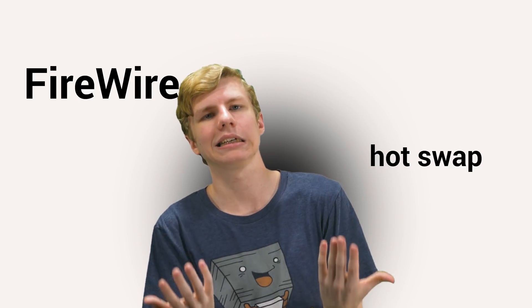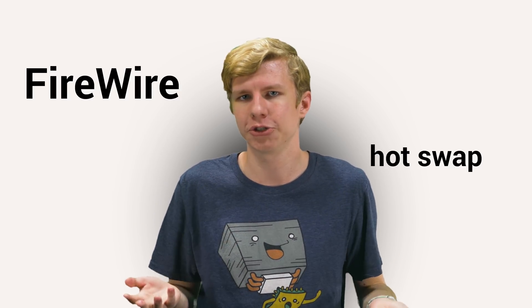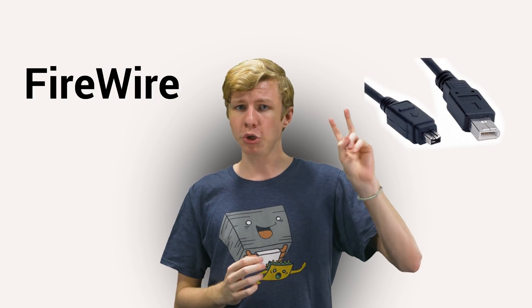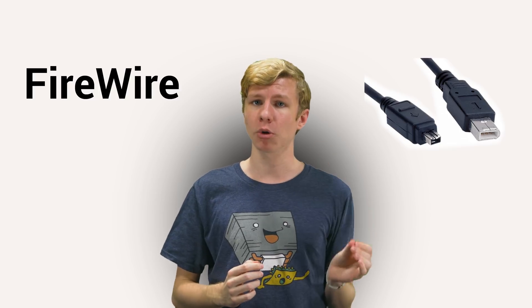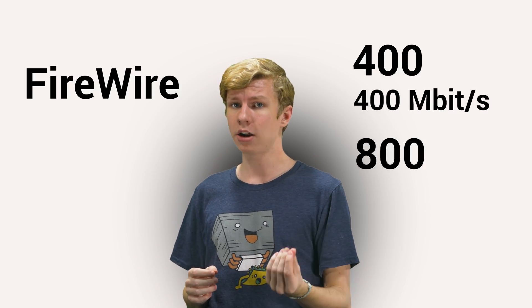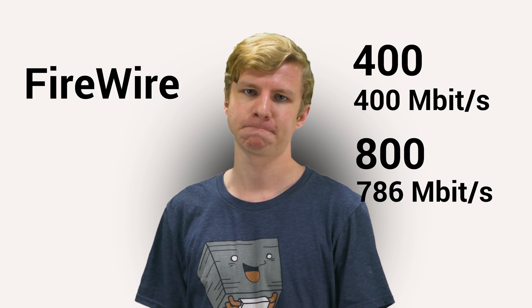Technically, many of the later serial devices could be hot-swapped without any issues, but it was not officially supported. There were two main connectors for Firewire, the 6-pin and the smaller 4-pin. Common versions included Firewire 400, which was rated at 400 megabits per second, and Firewire 800, which was capable of, you guessed it, 786 megabits per second. It's important to note, however, that the different versions were not intercompatible, which is one of the reasons that led to the downfall of Firewire.